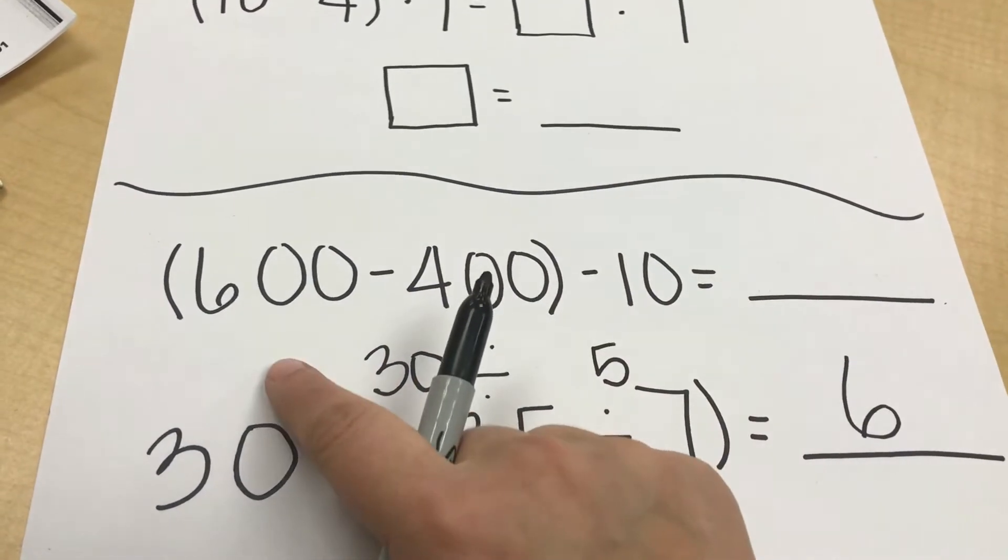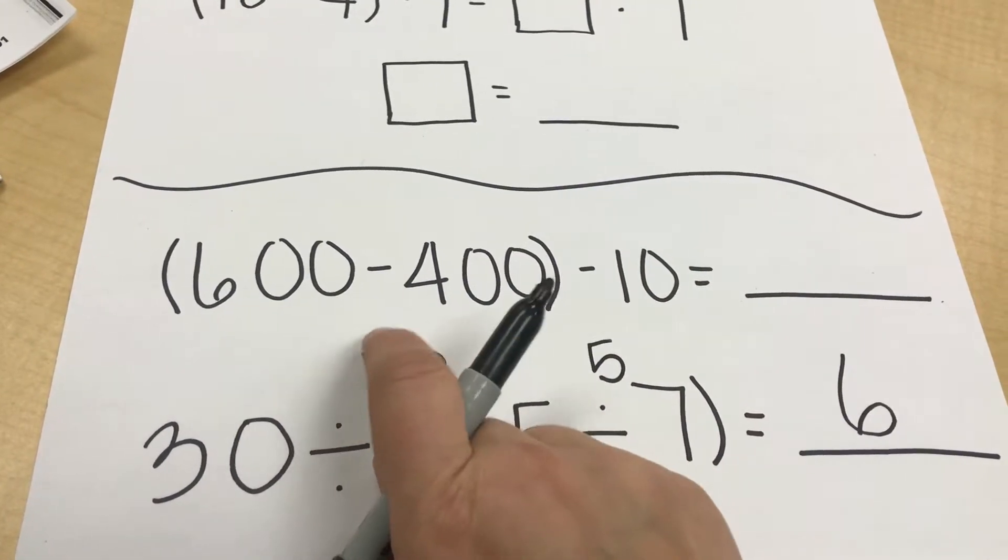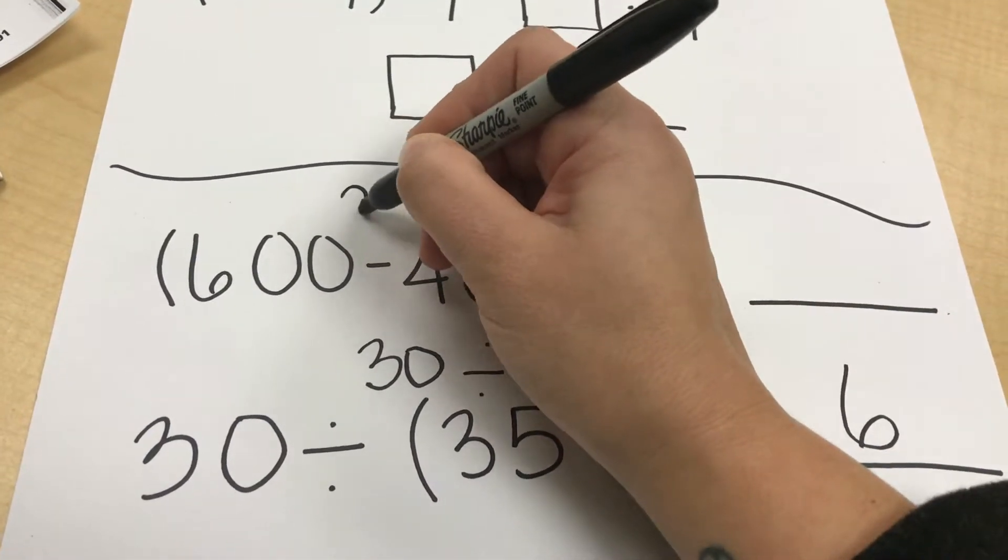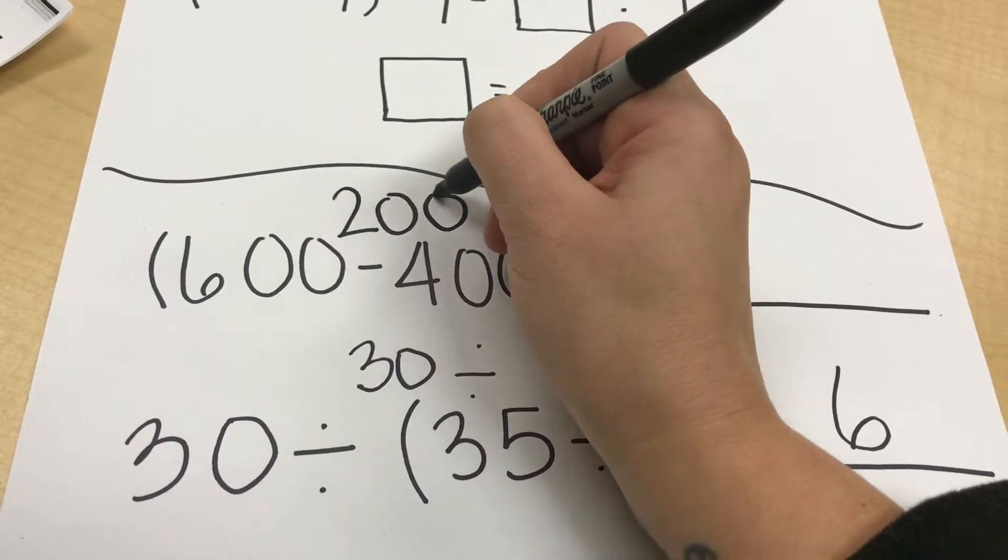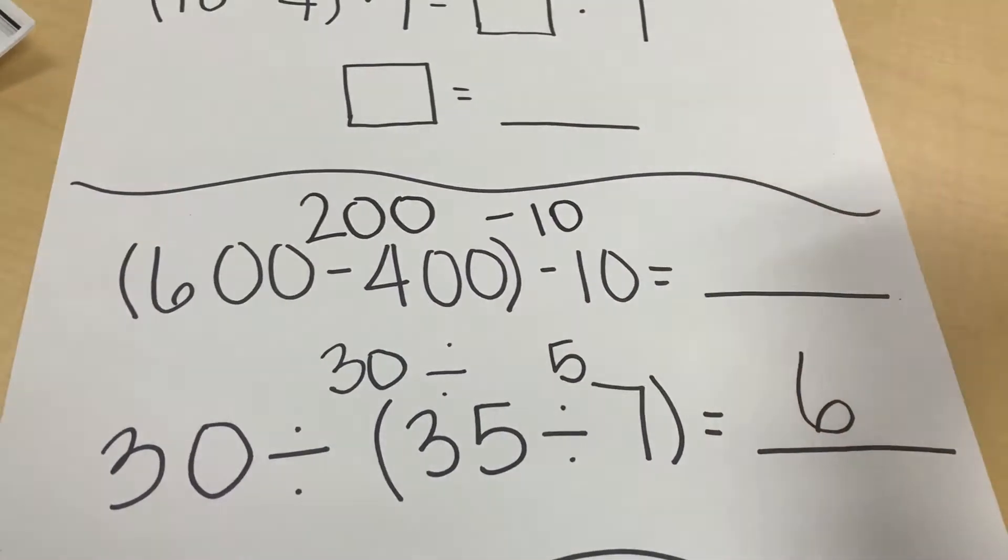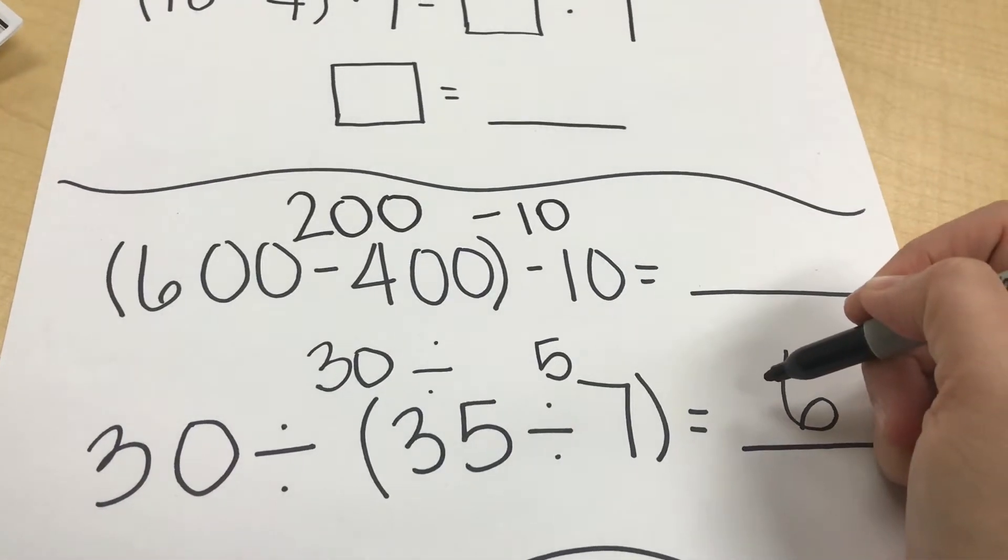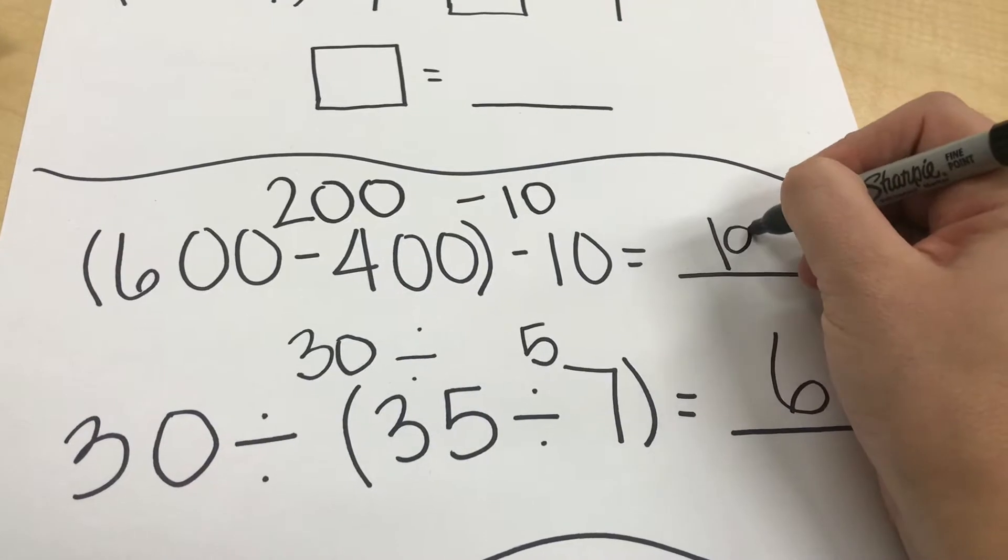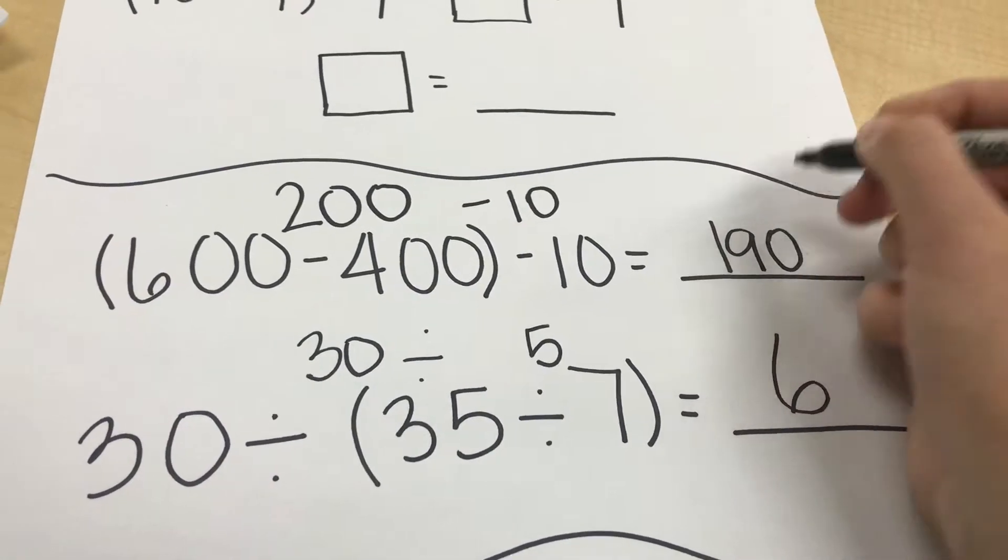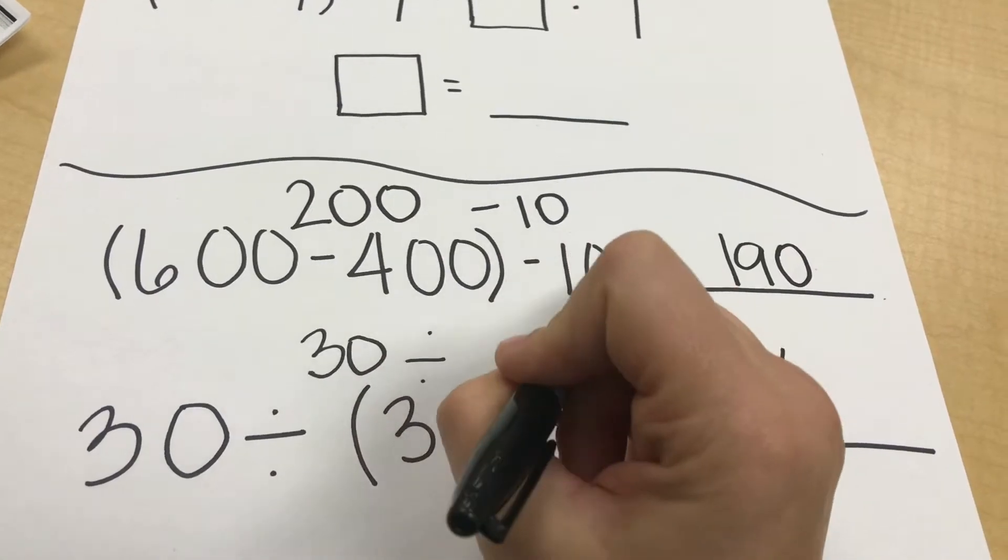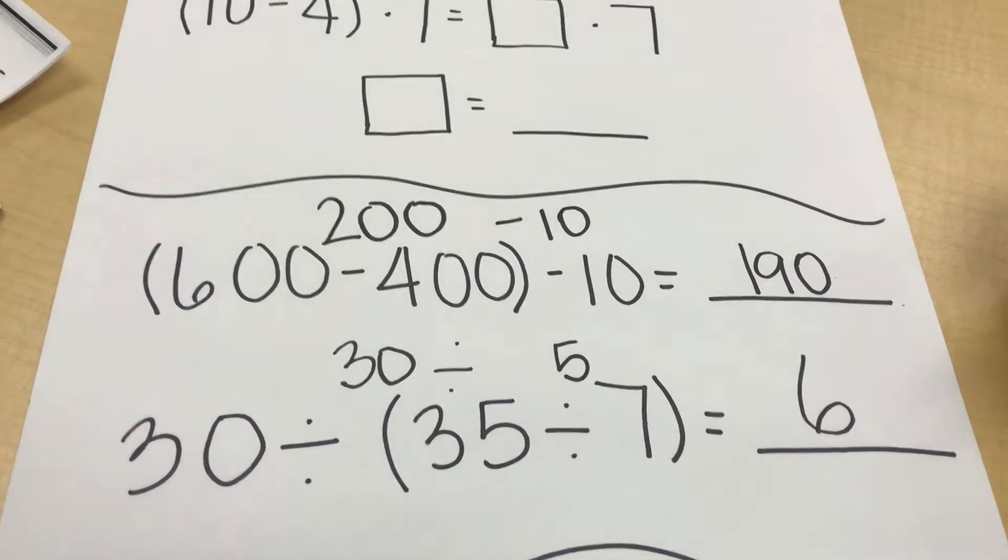So this next one here, inside my parentheses, I have 600 minus 400. 600 minus 400 is 200. And now I am able to work outside of my parentheses and I subtract 10. 200 minus 10 is 190. Again, if the subtraction is being done wrong inside the parentheses, then the operations outside will not be done correctly.